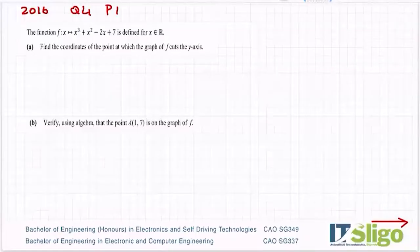Okay, 2016 paper question 4 part 1 was a mix of algebra and calculus. So the function f(x) is x³ + x² - 2x + 7 is defined for x's in R.